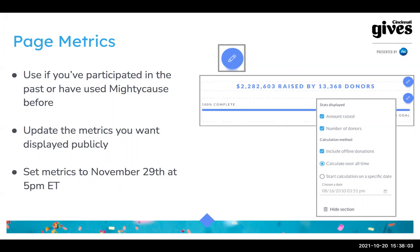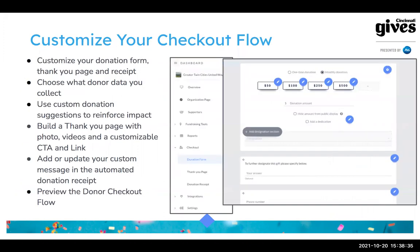For your goal, you'll want to make sure that you're counting from November 29th at 5 p.m., so you're only counting donations and donors that count for this year's Cincinnati Gives event. If you participated last year you are most likely counting from last year's donors, so definitely take a look at your page metrics and make sure they're set for this year. Also take a look at your checkout flow — you can create and update your thank-you page, which is where outdated information tends to hide.